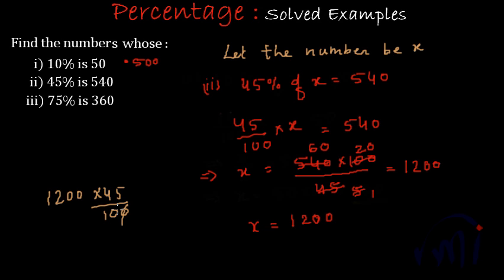0 will cancel 0's. 12 5's are 60. Carry forward 6. 12 4's are 48. 48 plus 6 is 54.